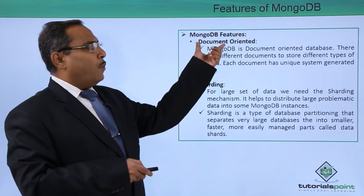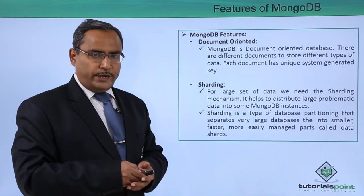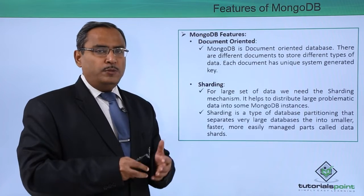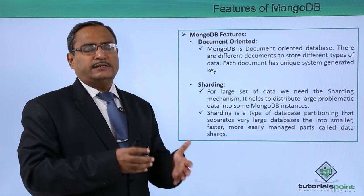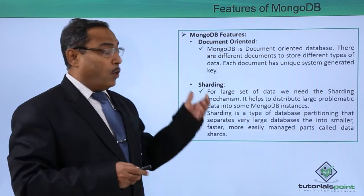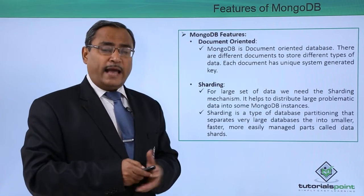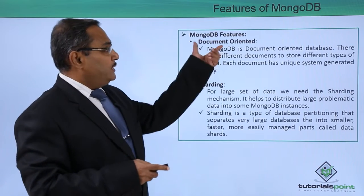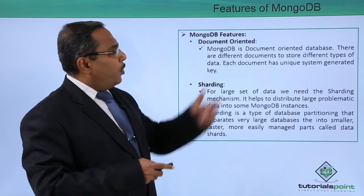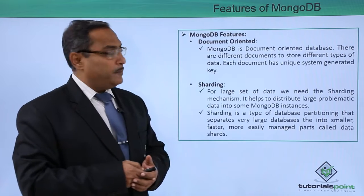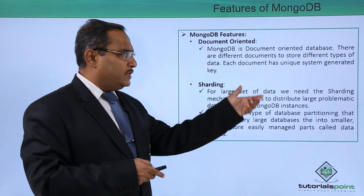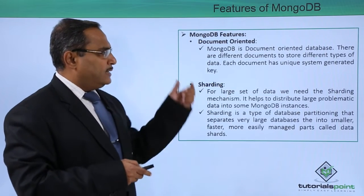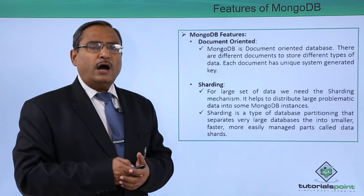Next, MongoDB is document-oriented. MongoDB is cross-platform and document-oriented. It has collections, and those collections contain documents. MongoDB provides high accessibility, availability, and high performance. Each document has a unique system-generated key or ID.